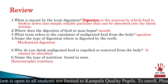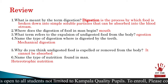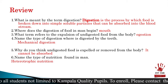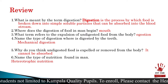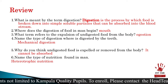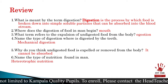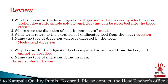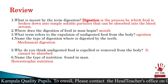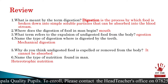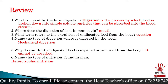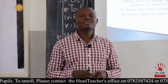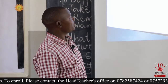Why do you think undigested food is expelled or removed from the body? It cannot be absorbed by the body — it is still in its bigger form, so it is removed. Another question: name the type of nutrition found in man. That is heterotrophic nutrition, where organisms depend on already-made food, like me and you.